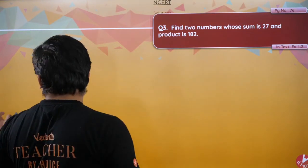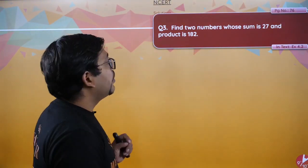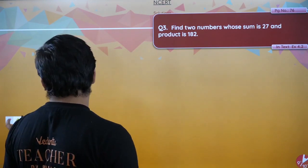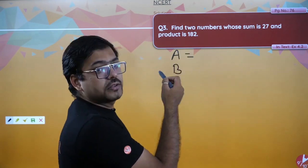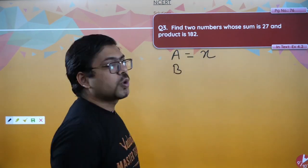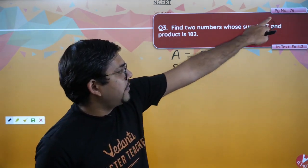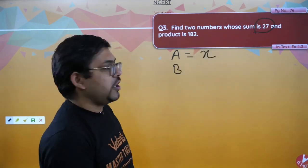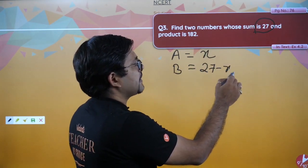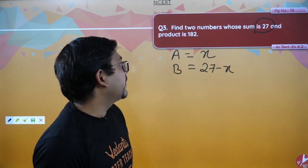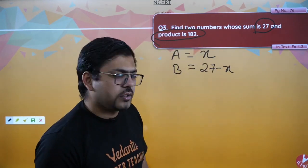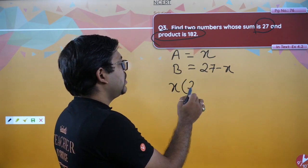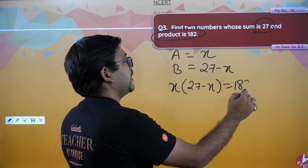Question number three: find two numbers whose sum is 27 and whose product is 182. We have to find two numbers whose sum is 27. Let one number be x, and the other is 27 minus x. Their product is 182, so x into 27 minus x should equal 182.